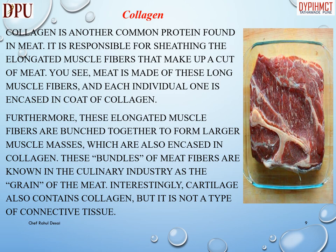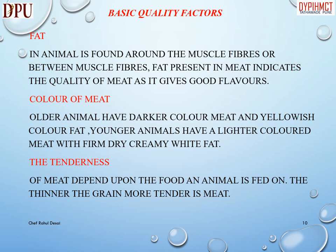Collagen is another common protein found in meat. It is responsible for sheathing the elongated muscle fibers that make up a cut of meat. Meat is made of these long muscle fibers, and each individual one is encased in a coat of collagen. Furthermore, these elongated muscle fibers are bunched together to form larger muscle masses, which are also encased in collagen. These bundles of meat fibers are known in the culinary industry as the grain of the meat. Interestingly, cartilage also contains collagen, but it is not a type of connective tissue.